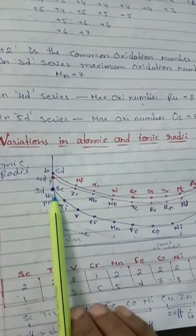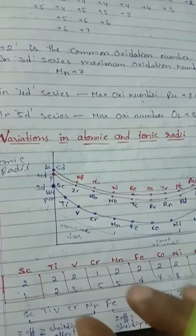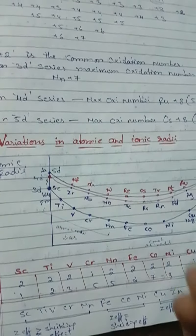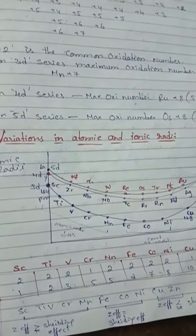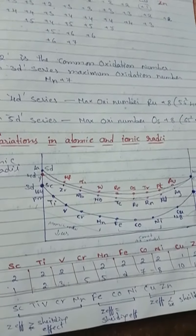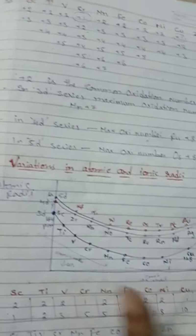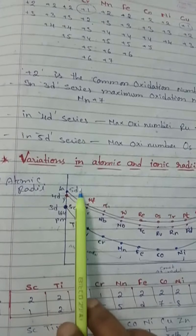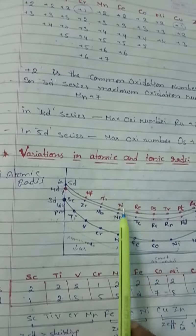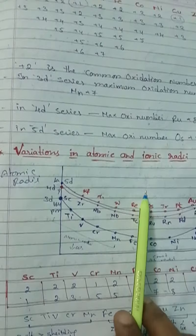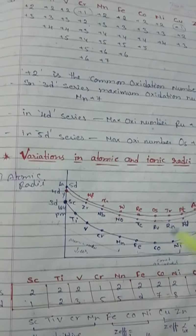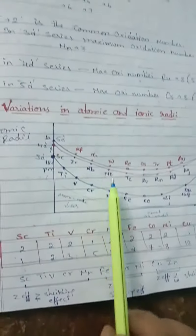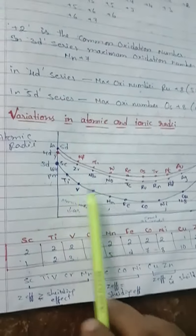The atomic radii in the series show slight irregularities — first they decrease, then increase, and then show some difference. The atomic radii decreases in a period at the beginning because with increasing atomic number, the nuclear charge goes on increasing progressively.